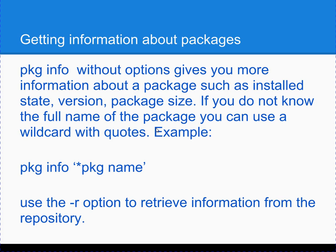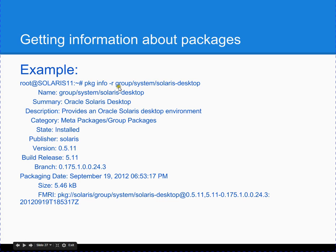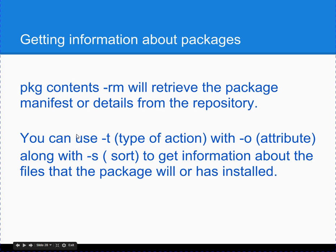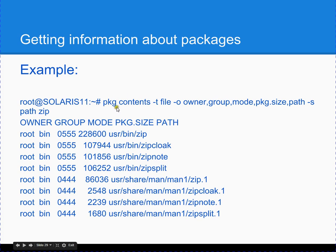To get more information about a package, use PKG info and provide the package name. The -r flag will retrieve information from the repository. Here's an example of PKG info -r on the Solaris desktop package — it gives you a bunch of information including the state, which tells you whether or not it's installed. PKG contents -r -m will retrieve the package manifest. Using PKG contents -t with additional switches, you can get attributes like owner, group mode, and file size.